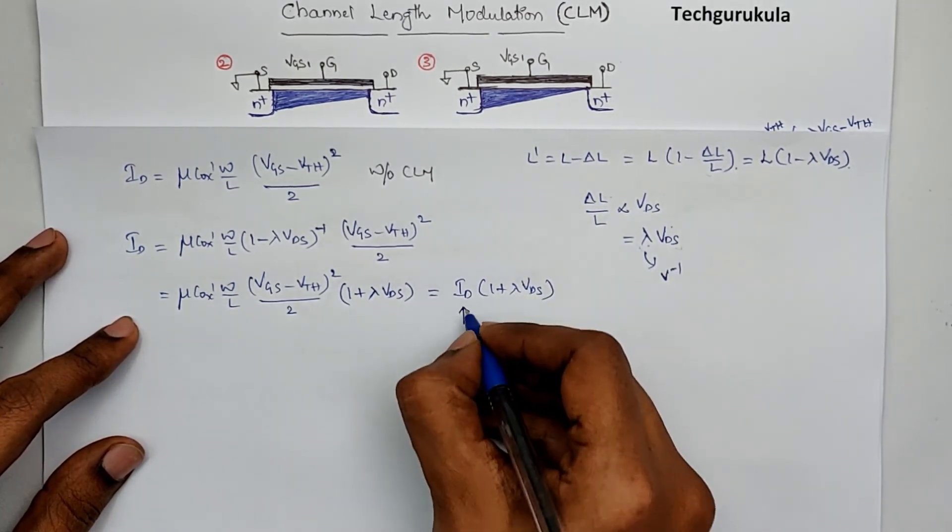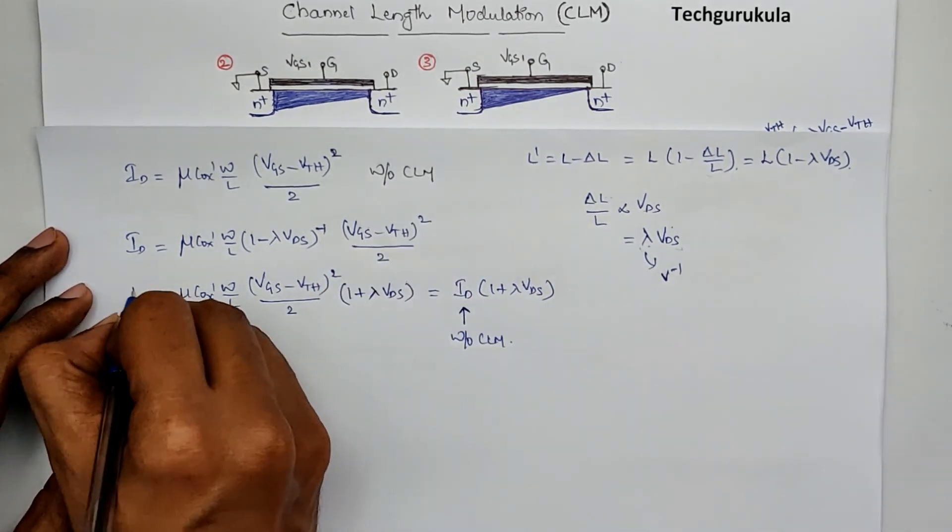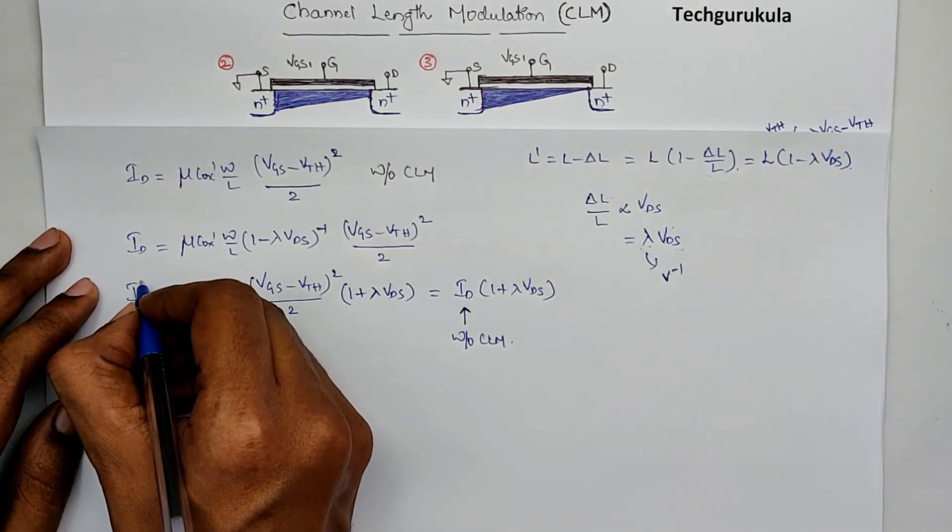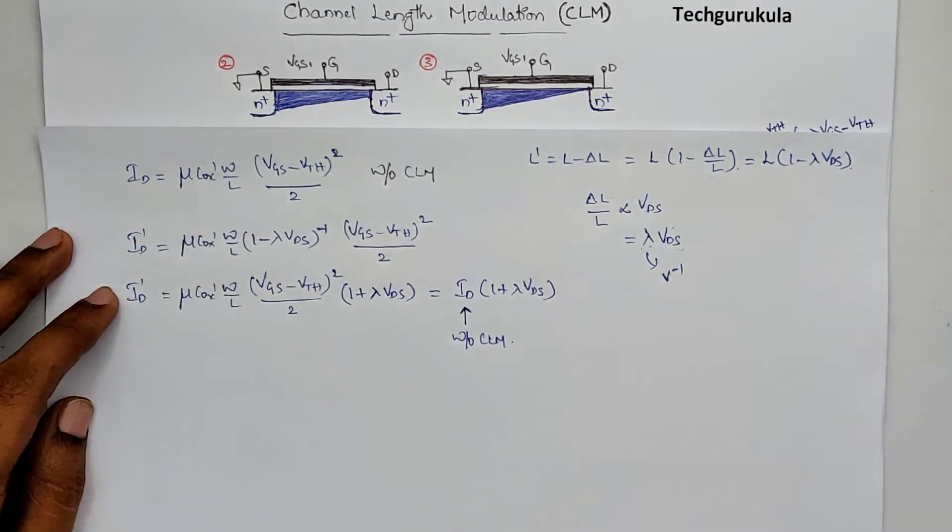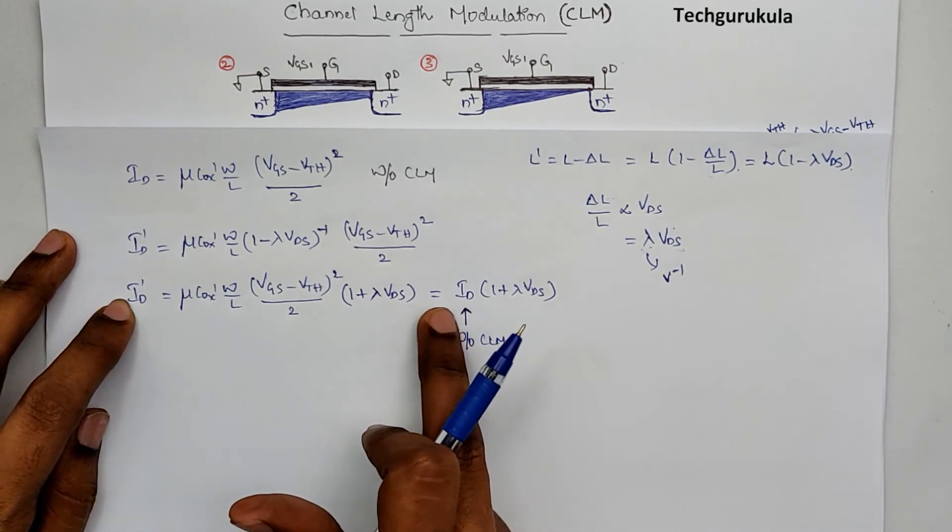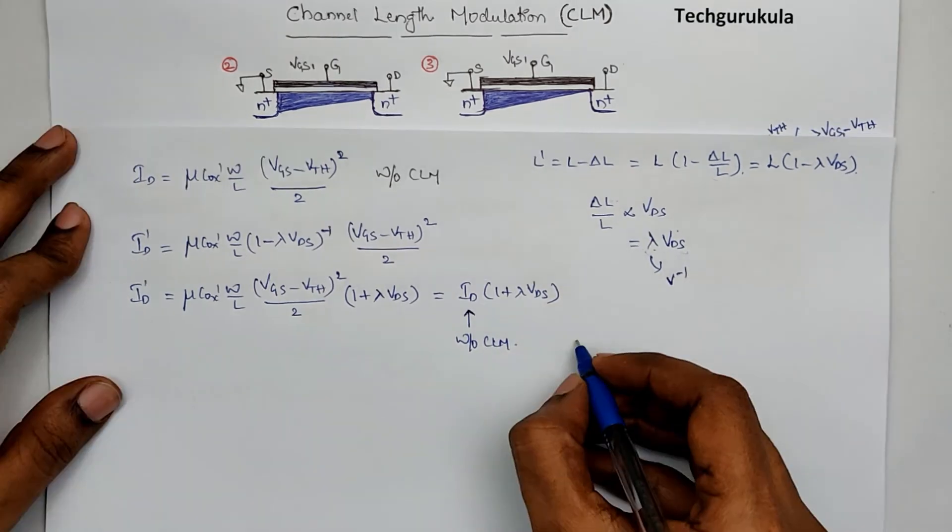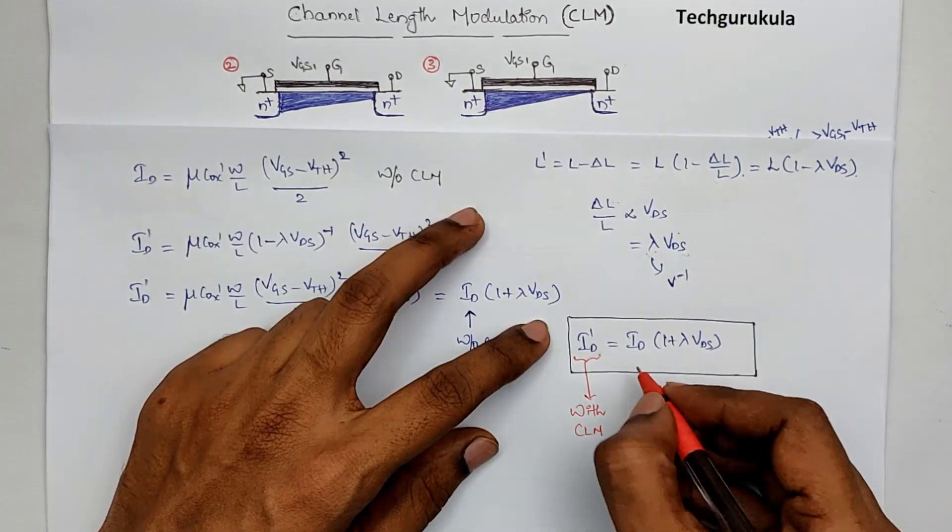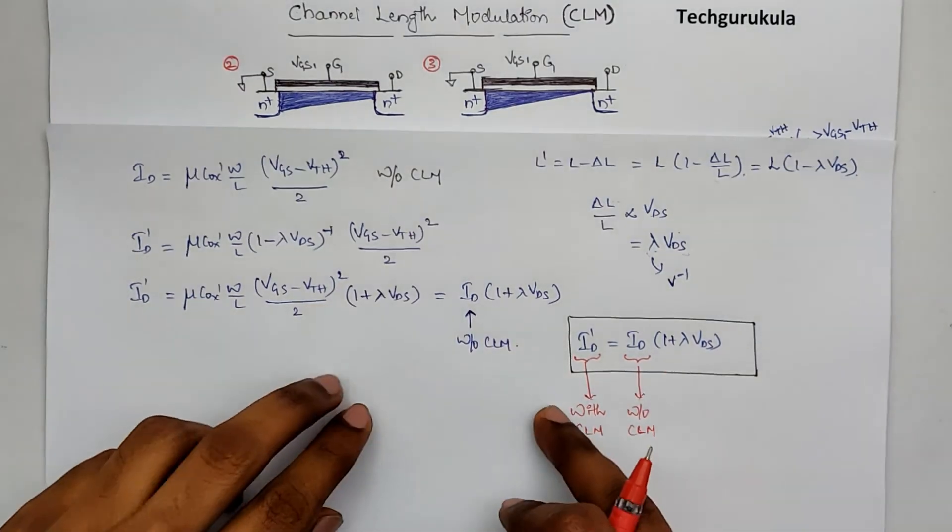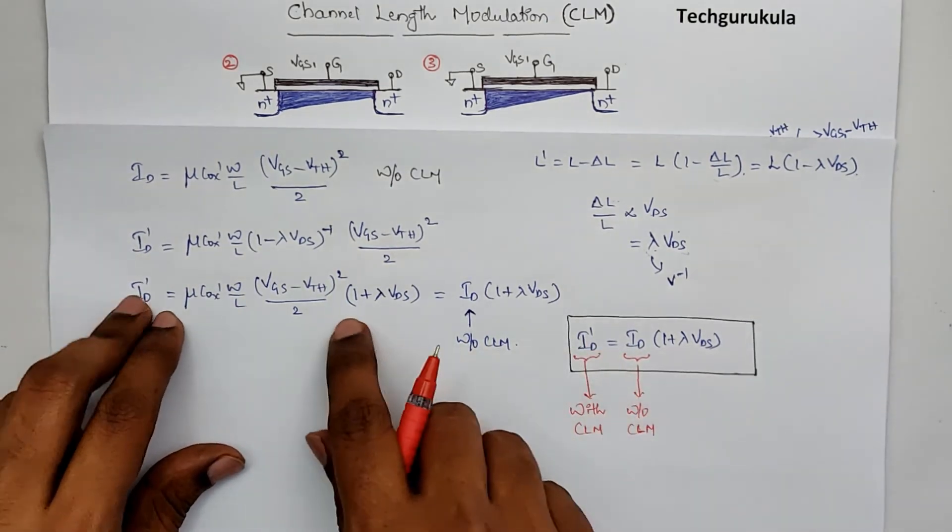So this is equal to Id times 1 plus lambda VDS, where Id is the current without channel length modulation. So let's put this. This is Id. Of course this Id is different, so just for convenience I am putting a prime here, which is a modified Id. Which is the drain current with channel length modulation is equal to the drain current without channel length modulation times 1 plus lambda VDS. So let me summarize here. This is channel length modulation, and this is without channel length modulation. And of course going forward I wouldn't be writing this as Id prime. Simply I will write Id is equal to the entire equation.